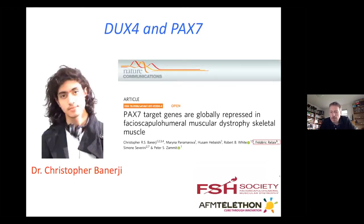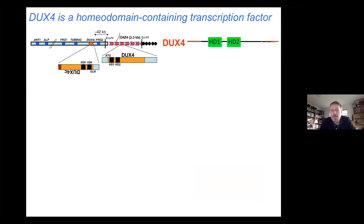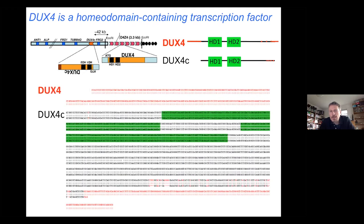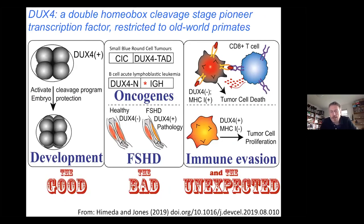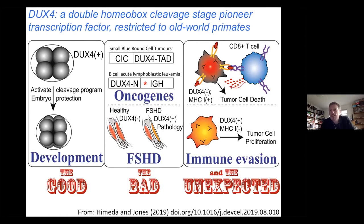Some work we did with Chris looking at PAX7 genes: DUX4 is a transcription factor with two homeodomains that it uses to bind DNA. There's also DUX4C, which is an inverted repeat slightly more centromeric. Normally, DUX4 seems to have an important role very early on in activating the genome at the fourth cell stage, and then it's somatically repressed by epigenetic mechanisms. In FSHD, changes in genomic configuration allow DUX4 to be expressed again, and you get ectopic expression of this transcription factor in somatic tissue where you would not normally see it in an adult.